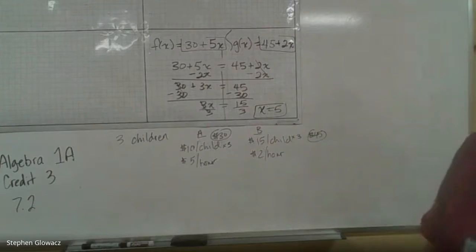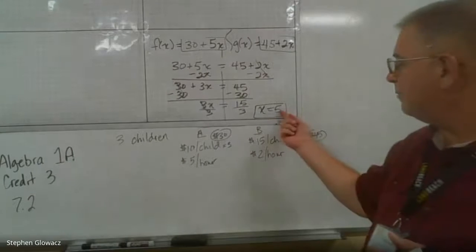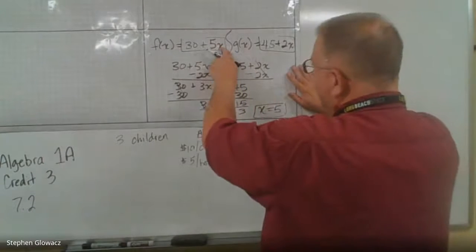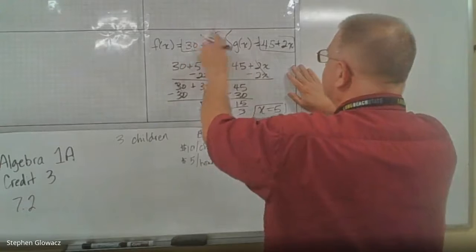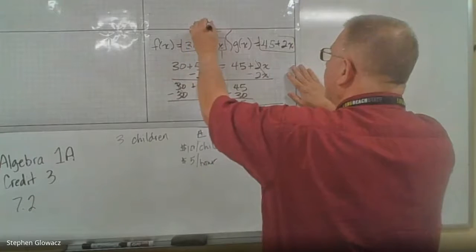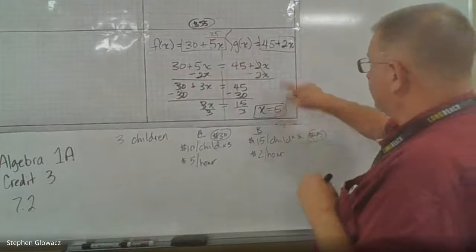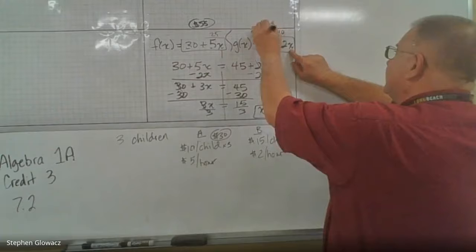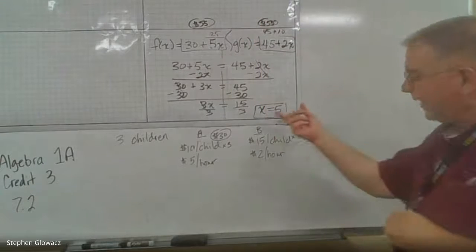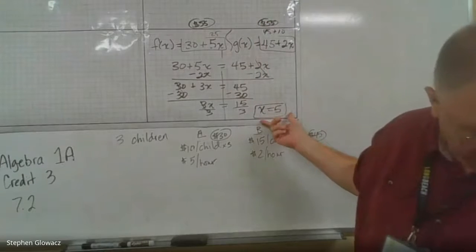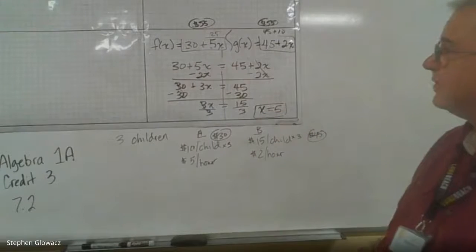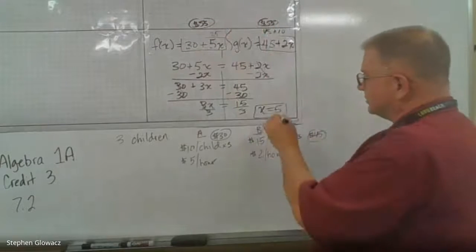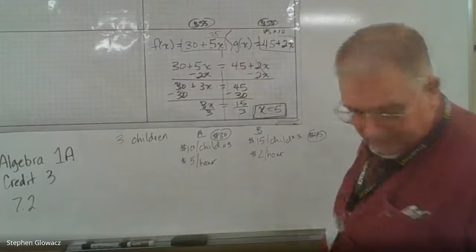So in context, after 5 hours both babysitters would charge the same amount. We can verify: plug in 5 for X in babysitter A — 5 times 5 is 25, plus 30 is $55. For babysitter B — 2 times 5 is 10, plus 45 is also $55. The answer to the question is 5 hours. If they had asked the charge, it would be $55.